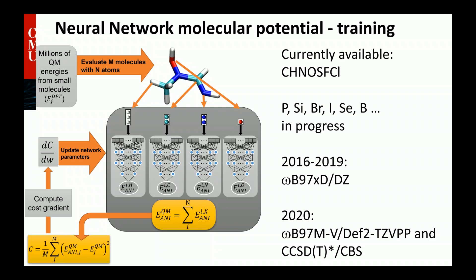Currently we have parameterized seven elements. If you draw a molecule with those seven elements, it will give you energy and forces. We're working to extend to most of the non-metallic elements. We made a choice to use a particular DFT functional and basis set combination: we use ωB97X-D with a double-zeta basis set. In 2020 we updated slightly, switching to ωB97M-V, a more modern DFT functional with a bigger basis set. We also have a coupled cluster with complete basis set extrapolation and a chain neural network.